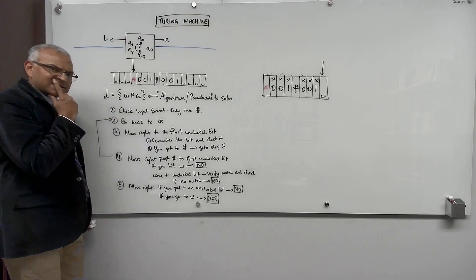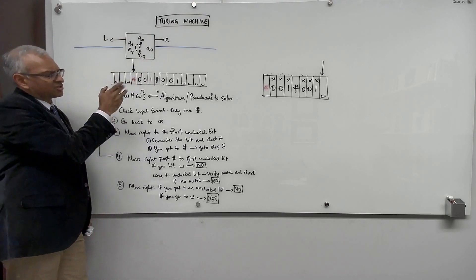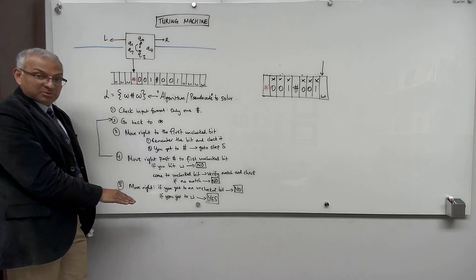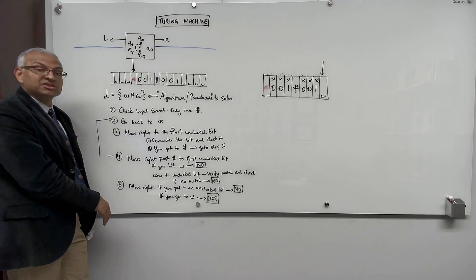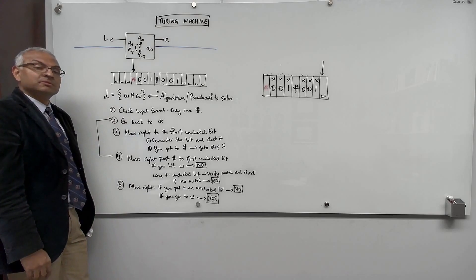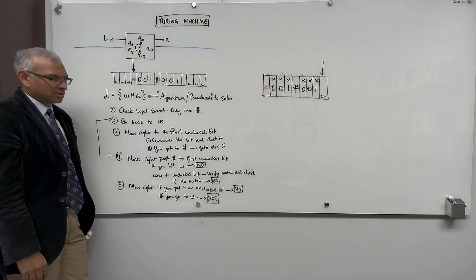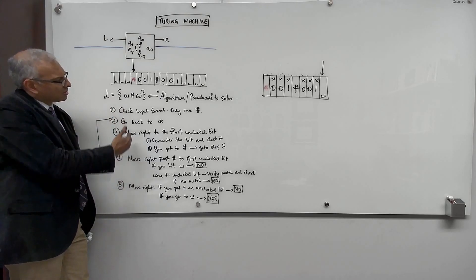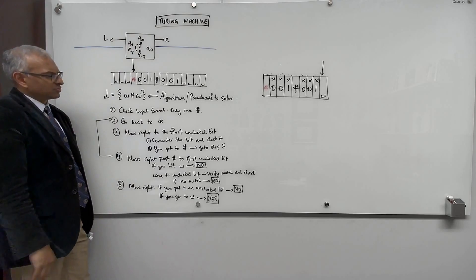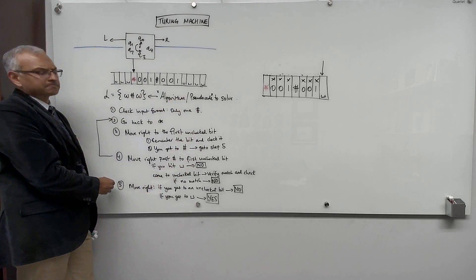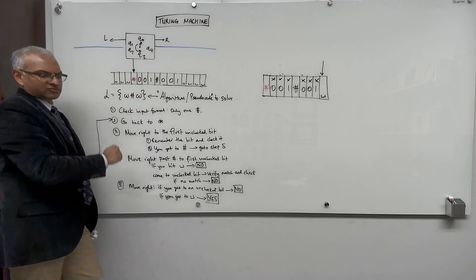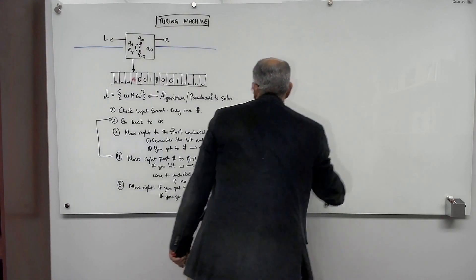This zigzagging behavior is typical of a Turing machine that solves any non-trivial problem. So that's the high-level algorithm. Now we're going to show you how we actually build this Turing machine. That'll be our only experience with building a Turing machine, and then we'll move on. Most of the time we'll be happy with these kinds of algorithm descriptions — pseudocode of the Turing machine showing you how it zigzags and solves the problem. So let's erase it and build this Turing machine.